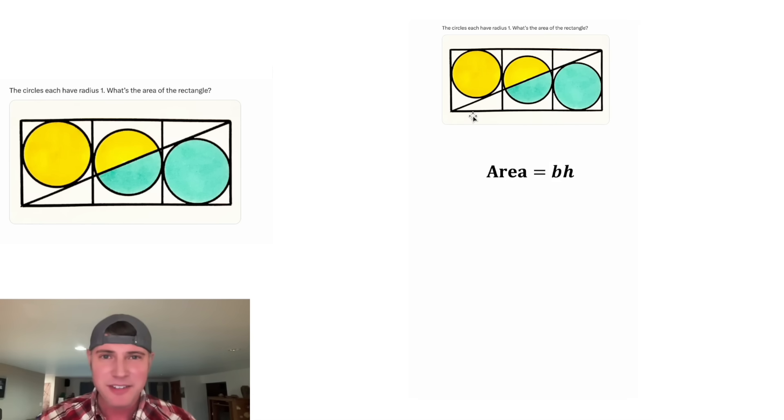The area of a rectangle is base times height. Each of these diameters is equal to 2, so this base is going to be equal to 6. We don't know the height, so let's call it h. The area is going to be equal to 6h. Our goal is to solve for this h. Let's put a box around it.